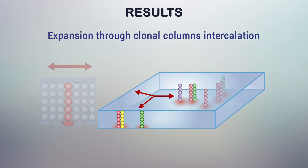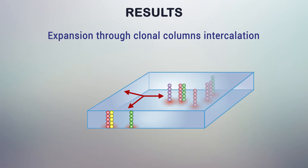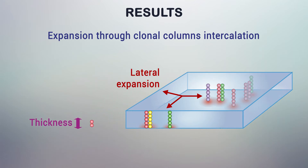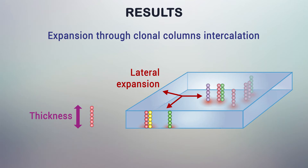This previously unanticipated mechanism of growth uncouples the lateral expansion of curved cartilaginous sheets from the control of cartilage thickness. The latter is rather defined by numbers of cell divisions within individual clonal columns.